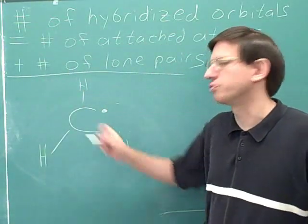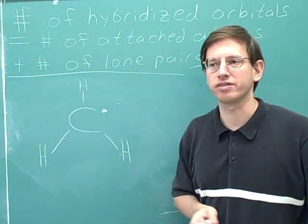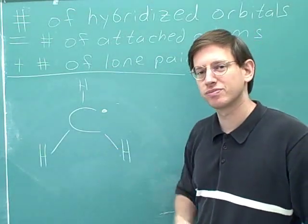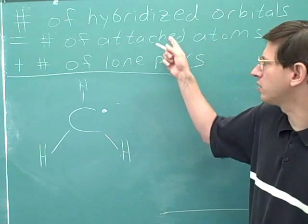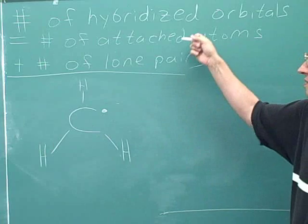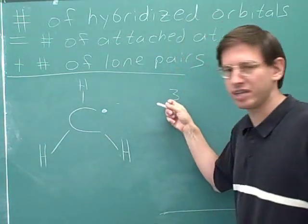Now we have a carbon radical. We call this a radical because there's an unpaired electron. What's the hybridization of this carbon? Let's follow along with the rule. The number of attached atoms is three. We have three attached atoms.